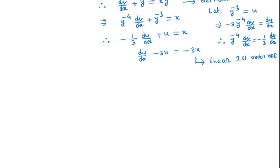We solve it by using an integrating factor. First we will find the integrating factor, which is e to the power of the integral of minus 3 dx, giving e to the power minus 3x.